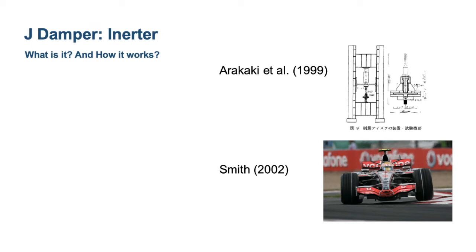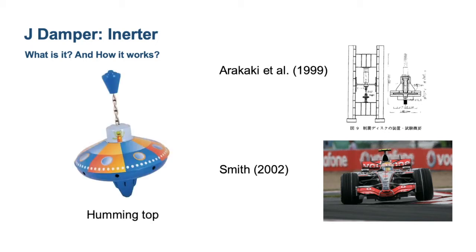So what is this inerter? This inerter is basically a device that outputs forces that are proportional to the relative acceleration between its terminals. In one of its widest realizations, it's like a humming top. In this case, you get this disc to rotate by the action of a ball screw, and the force that you need to apply to this toy to start its motion is proportional to the relative acceleration between points A and B.